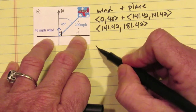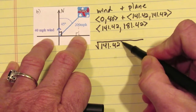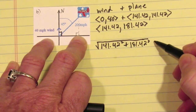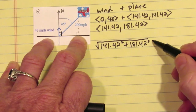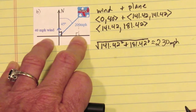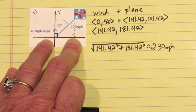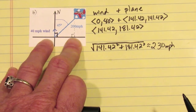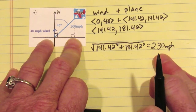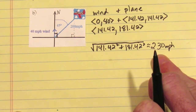The magnitude, following the Pythagorean theorem, is the square root of x squared plus y squared. In this case we end up getting approximately 230 miles per hour. The wind is still pushing the plane, but because it's not directly in the same path, some of the wind's speed goes in a different direction, so the plane's speed only increases to 230, not 240 miles per hour.